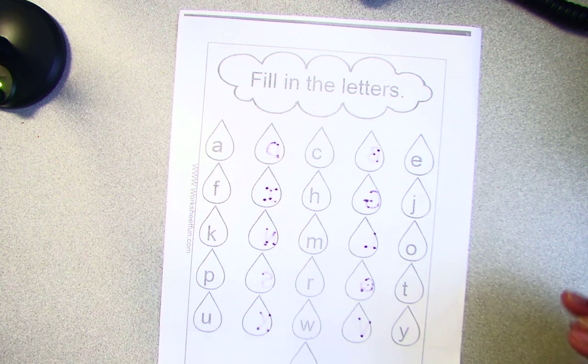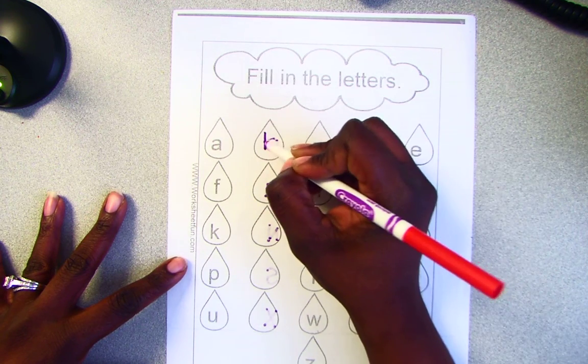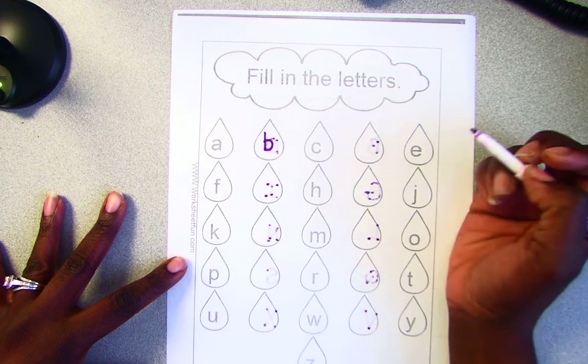We'll fill in the missing letters. It starts with A, so we'll fill in B. Next letter is C,